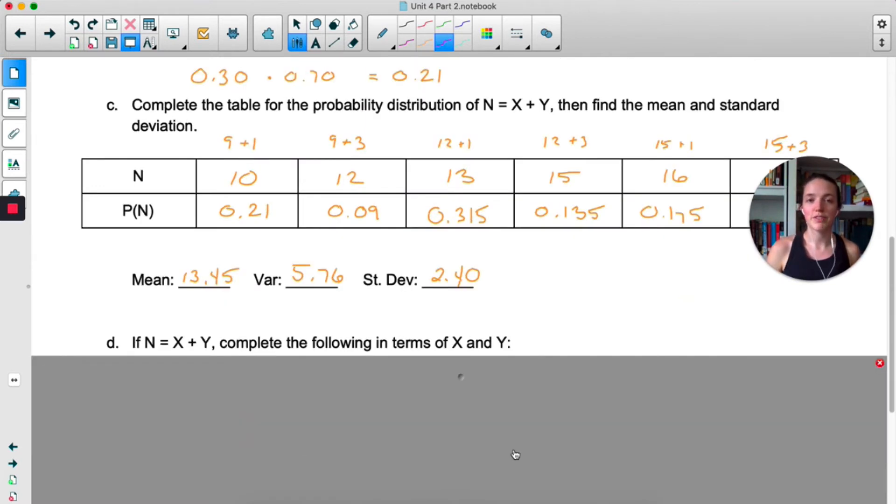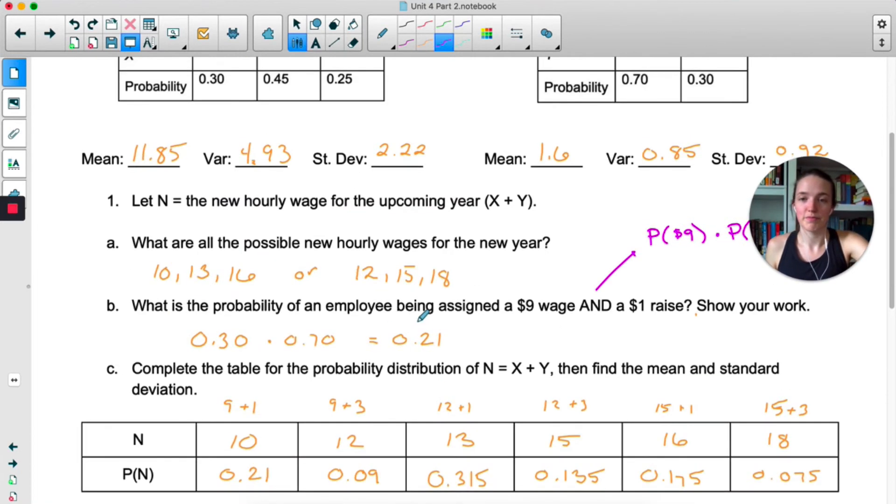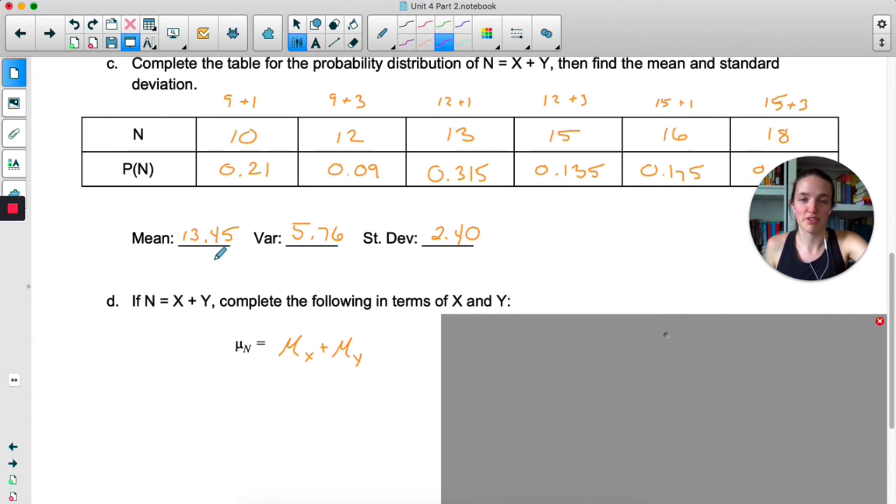Take a moment and see if you can figure out the relationship between X, Y, and N. Pause the video and mess around on your calculator for a bit to see if you can figure it out. So I think the mean is definitely easier. The mean of N is just the mean of X plus the mean of Y. It was 11.85 plus 1.6, gave us 13.45. Easy.